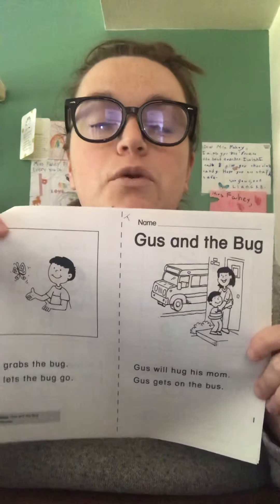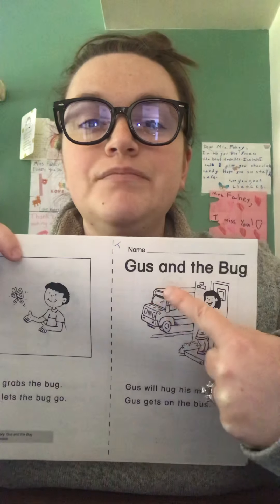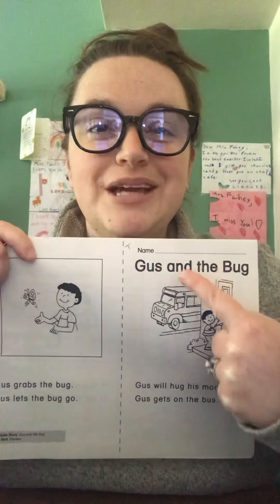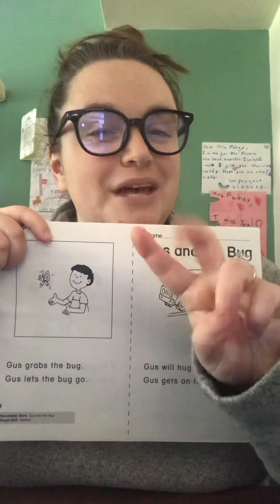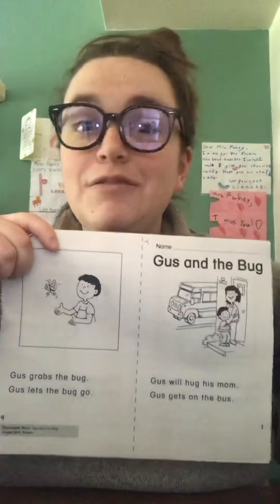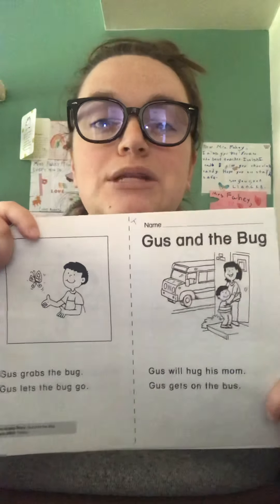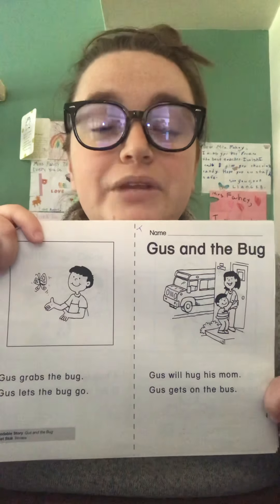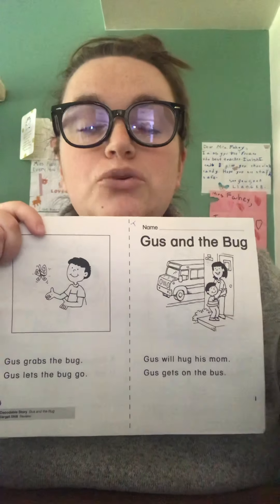Then let's come to our little reader this week, going right into our little reader. Again, focusing on that short U and listening for it. The title of our story is Gus and the Bug. Don't forget to put your name on top once you pull out your story and then read it through. Do you remember how many times? Not once, not twice, at least three times. If you want to do more than three, great, go ahead. But at least three times, really practicing sounding out those words that we don't know.